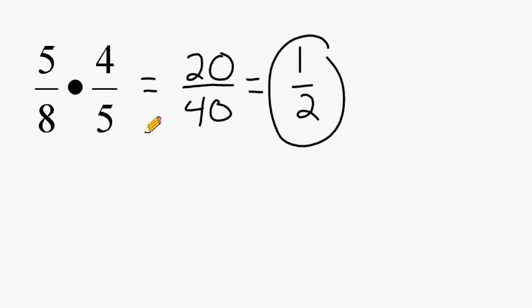Now another way that we could have done this problem is to recognize that we had a 5 on the top and a 5 at the bottom. When you are multiplying numbers where you have a numerator and a denominator that are the same, you may cancel those numbers out and change them both into the number 1.